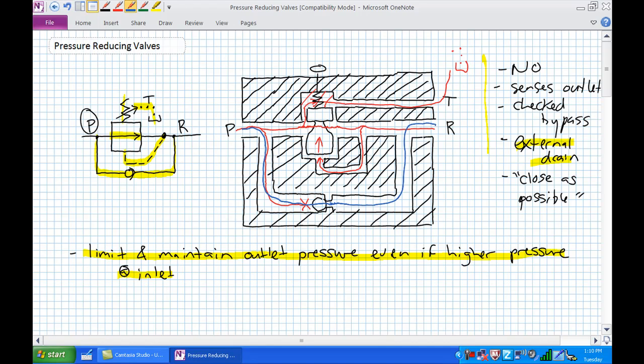It's normally open, and it will close itself down when pressure at the outlet gets too high. Typically, it's check bypassed. It's externally drained because R is still a pressurized port. And where is it installed? It's installed as close as possible. So let's go ahead and just put it in a circuit.